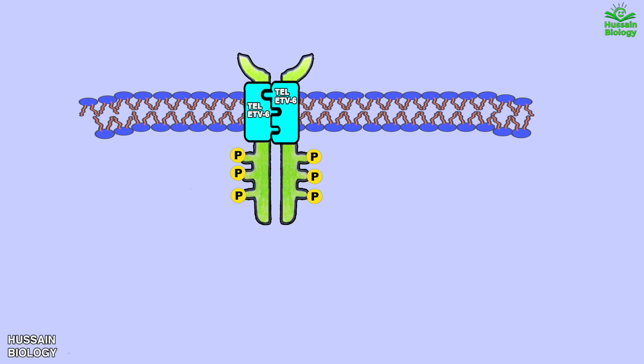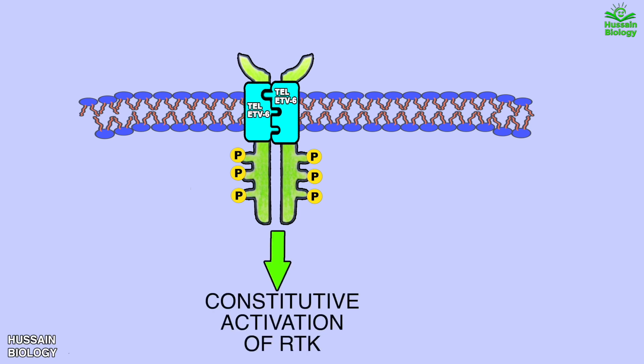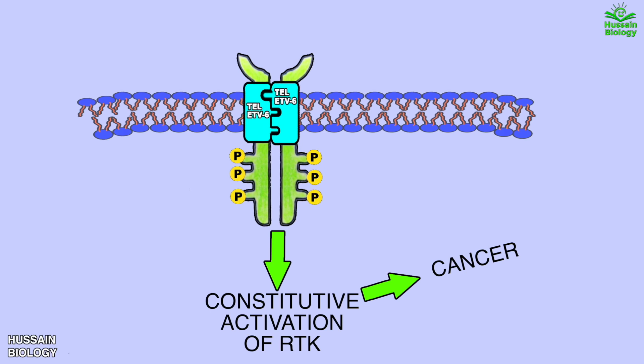This signaling by the mutated PDGFR receptor leads to constitutive activation of the kinase domains of the PDGFR receptor, which always keeps the signal on — leading to cancer. Additionally, the oncoprotein is highly stable due to its resistance to ubiquitin-proteasome degradation. This is how we get the transformation of a proto-oncogene into an oncogene, where the receptor tyrosine kinase PDGFR receptor remains always active.